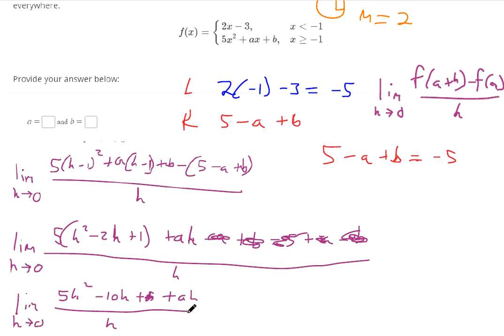Look, you can factor out an h from everything in the numerator. So factor out the h and you're going to have h times (5h minus 10 plus a) over h. Those cancel. Now we don't have a divide by 0 problem. If you plug in 0, you get negative 10 plus a.